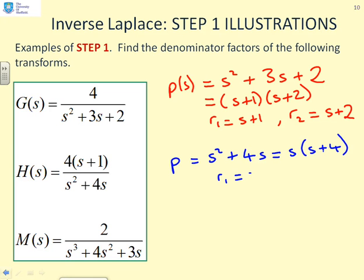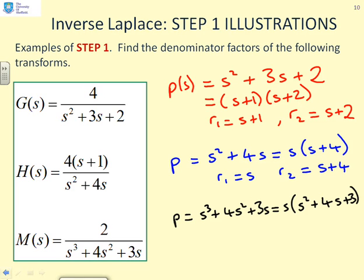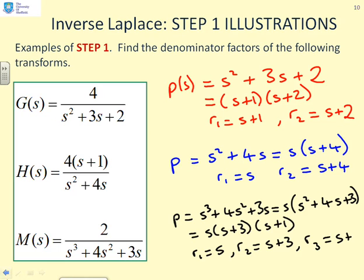Finally, if I look at M, you'll see I've got P equals s cubed plus 4s squared plus 3s, which has a factor s which I can take out by inspection. So I get s times (s squared plus 4s plus 3). Then I can rewrite this as s(s plus 3)(s plus 1). So I've got r_1 equals s, r_2 equals s plus 3, and r_3 equals s plus 1.